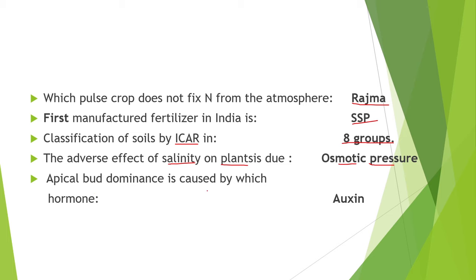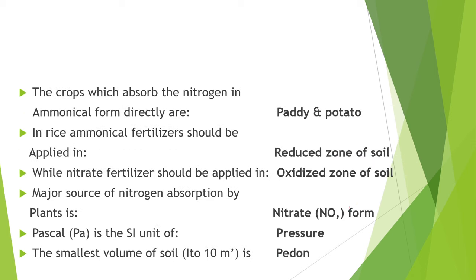Next point is, apical bud dominance is caused by auxin hormone. The crops which absorb nitrogen in ammonium form directly are paddy and potato. In rice cultivation, we do not use nitrate fertilizer but only ammonium fertilizer. The ammonium fertilizer should be applied in the reduced zone of soil, while nitrate fertilizer should be applied in the oxidized zone of soil.